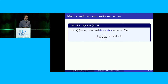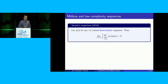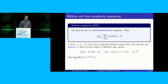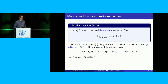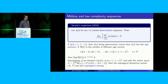Moving on to Sarnak's conjecture: more precisely, it states that the Möbius function is orthogonal to any plus-or-minus-one valued deterministic sequence. What does it mean for a sequence to be deterministic? If a sequence takes plus-or-minus-one values, a simple way to state that it's deterministic is to say that the sequence has few sign patterns — if the number of different patterns of length k that you see is less than exponential in k, then we say that A is deterministic.